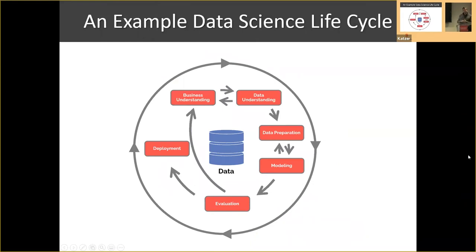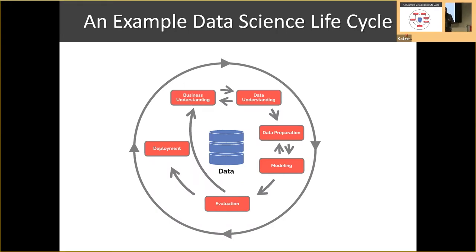When we think about a data science project, we can think about a lifecycle of how we work on one. We start almost always with data understanding and business understanding. We need to understand the business context of the data we've collected: what is the problem we're trying to solve, what kind of prediction would be useful, what kind wouldn't be useful? Then data understanding: what data is available, how valid is the data, how clean is the data, how much data do we have, what type of attributes do we have, and how can we collect data from different sources and combine them together?